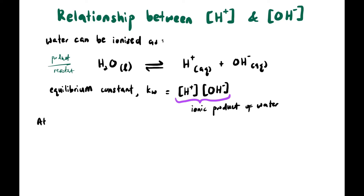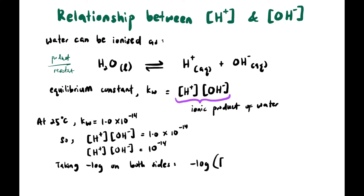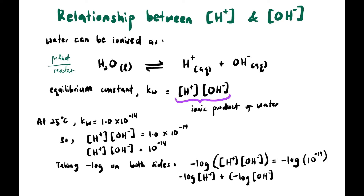At 25°C, Kw = 1.0 × 10⁻¹⁴. So [H⁺][OH⁻] = 10⁻¹⁴. Taking the negative log of both sides: -log([H⁺][OH⁻]) = -log(10⁻¹⁴). Expanding the left side: -log[H⁺] + (-log[OH⁻]) = 14. Since -log[H⁺] = pH and -log[OH⁻] = pOH, we get pH + pOH = 14. The sum appears because the log of a product becomes a sum of logs.